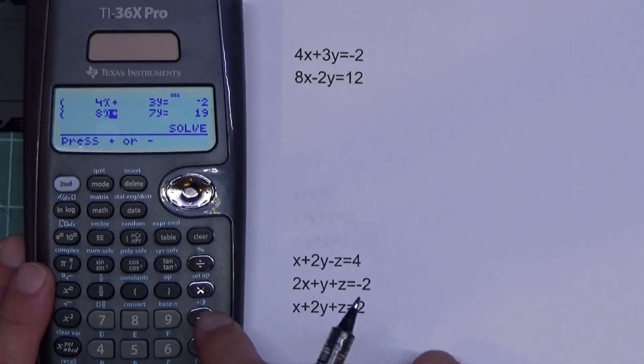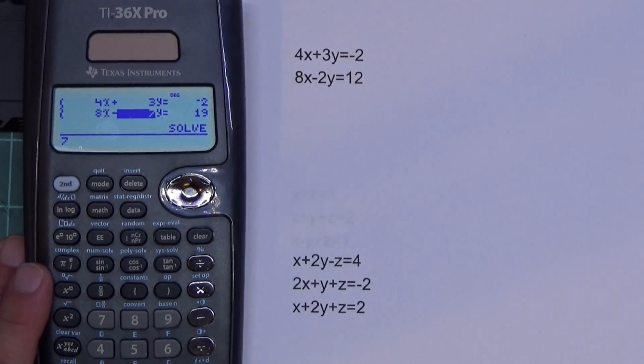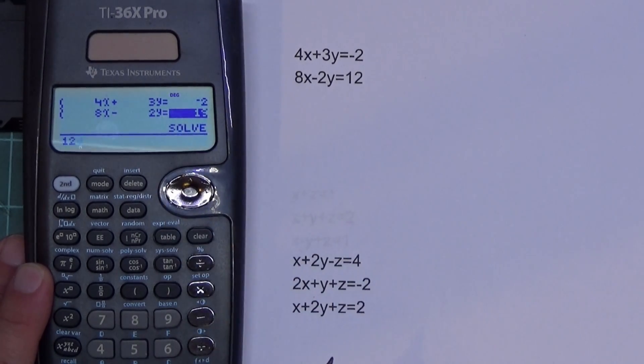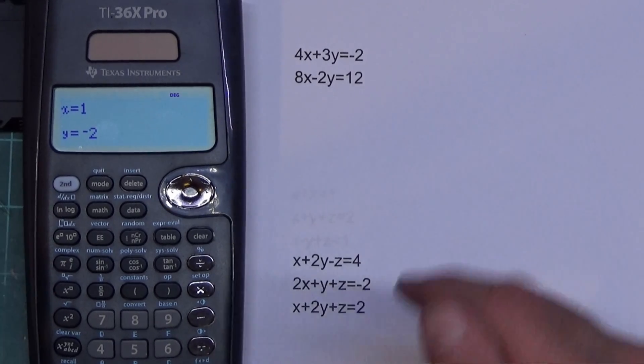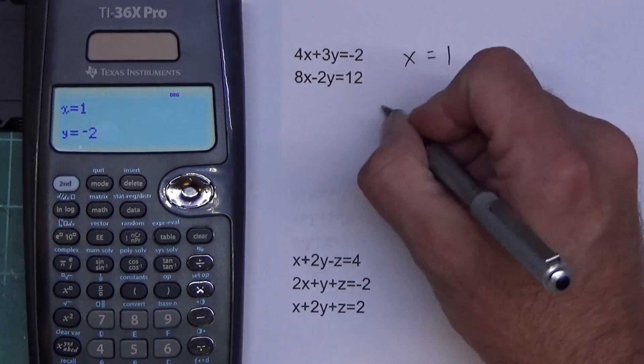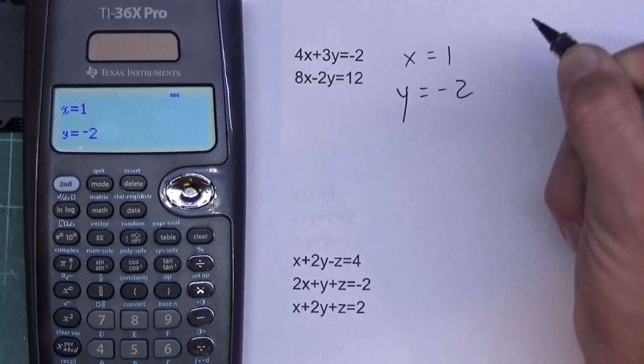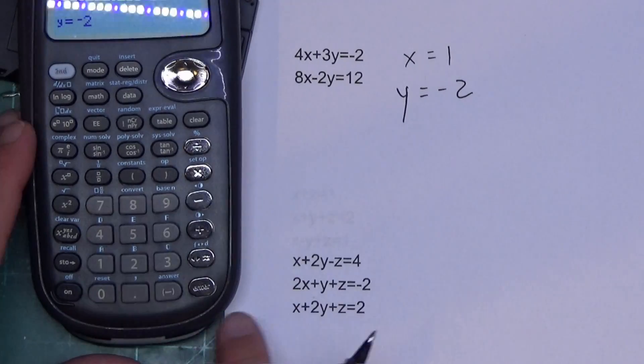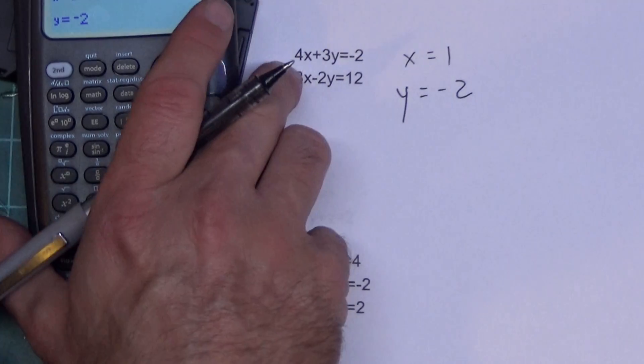And then I'm going to type in 8 for X. Now this time I need to change it to a minus. So I hit the minus. I type in 2 for Y, and this is 12. And then I'm going to press enter on solve. This time it tells me X equals 1, Y equals negative 2. There's no decimal, so no need to push the magic button right above enter.